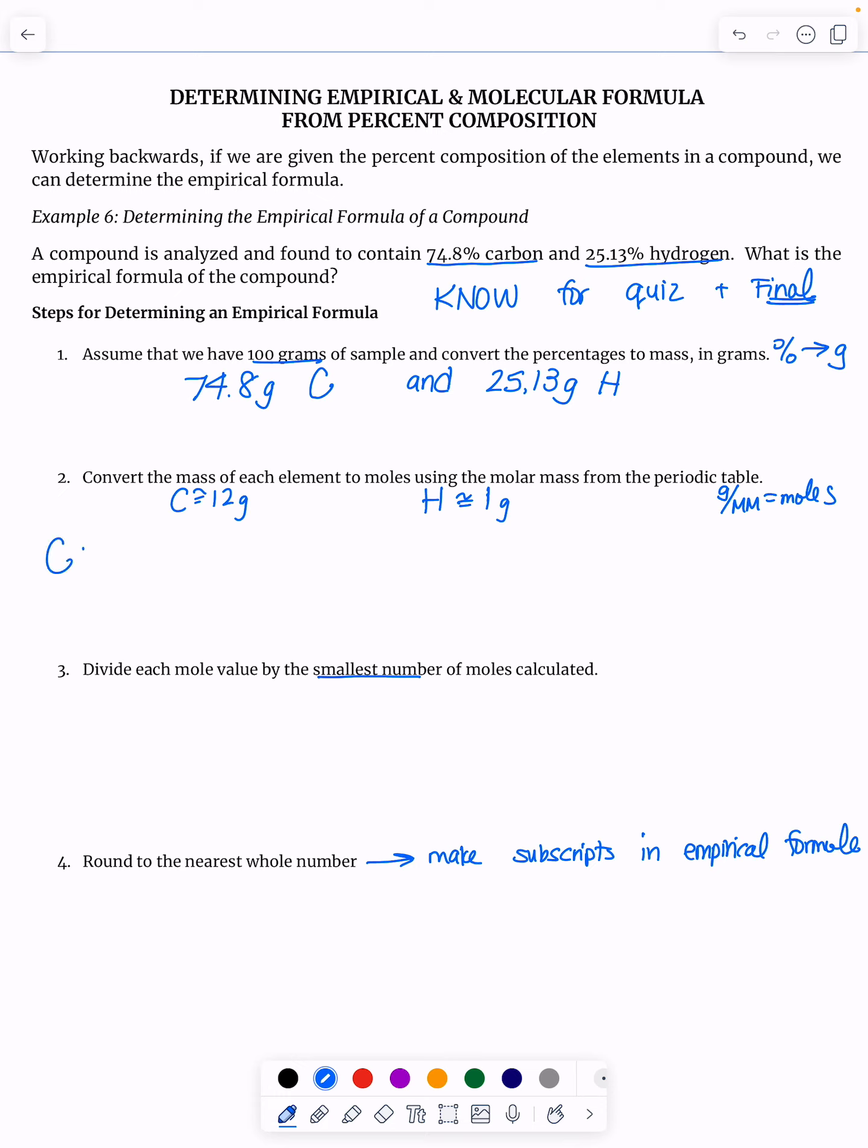I'm going to divide these masses by those molar masses. So for carbon, it's 74.8 grams of carbon divided by about 12 grams per mole. And I get 6.23 moles of carbon.